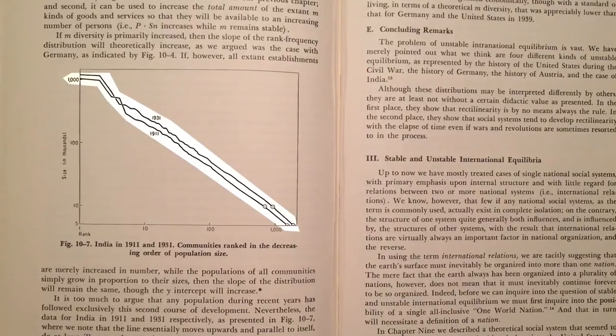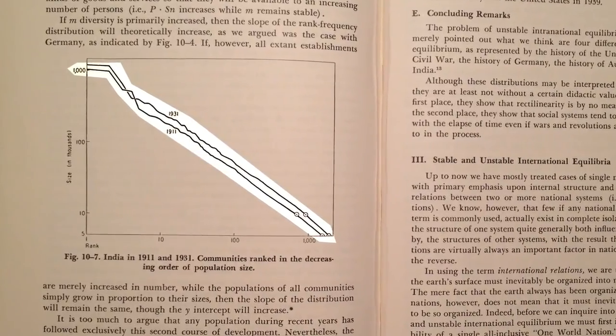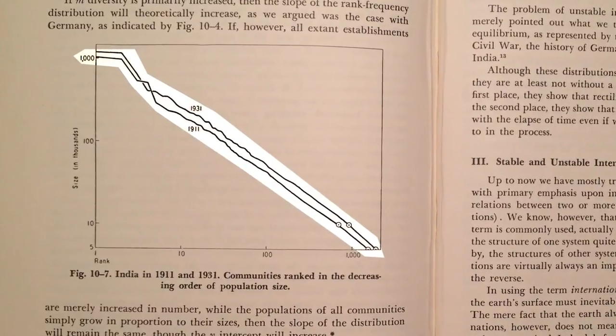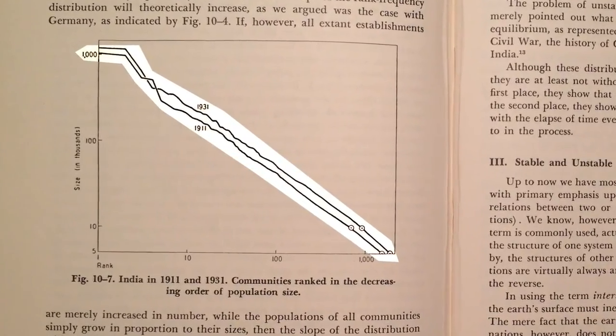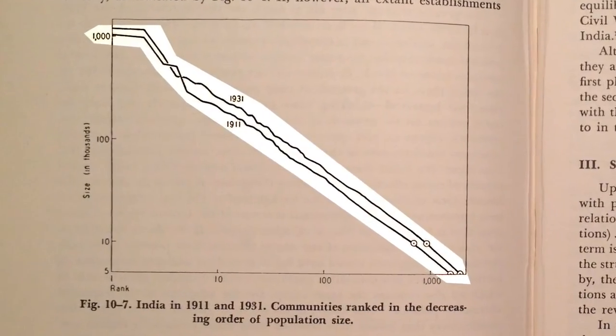In the case of India, which gained independence from Britain in 1947, Zipf gave two different explanations. In 1941, before independence, he said the flatness at the top was because India was ruled from London, which was missing from the graph. After independence, in 1949, he said it reflected diversification and explained India's partition and the creation of Pakistan.